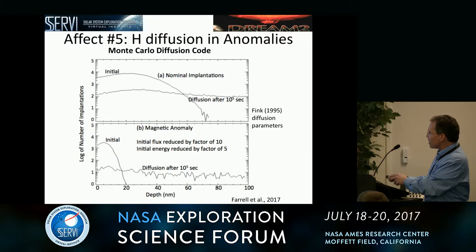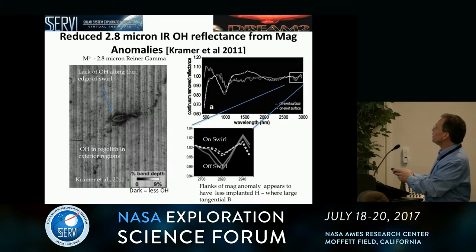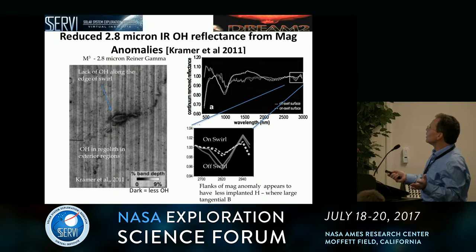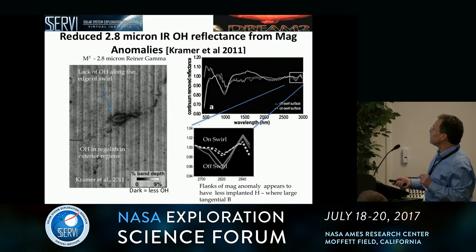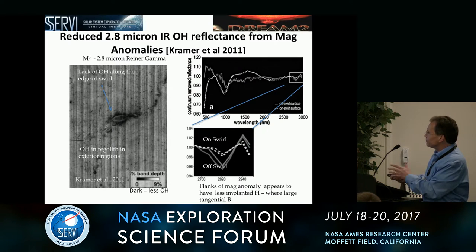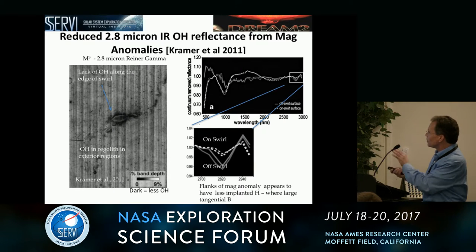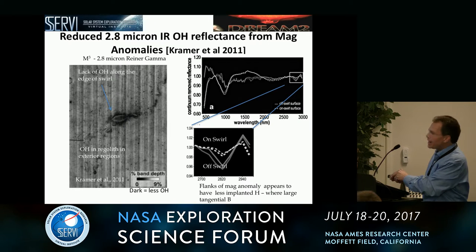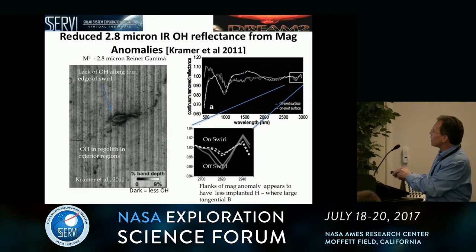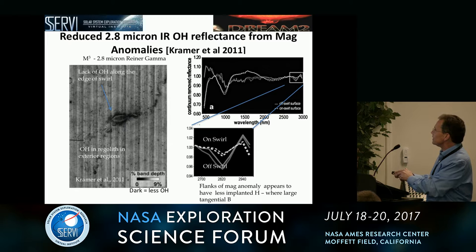This may relate back to George Kramer's work in 2011, where in Reiner Gamma, for example, there was less OH. What we're looking at here is the 2.8 micron feature, where dark represents less hydroxyl and whiter means more hydroxyl. You can see it's darkened in the anomaly region, meaning there's less retained hydrogen.